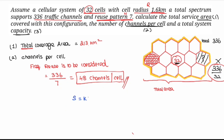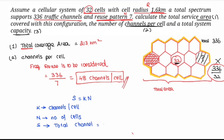The formula in theory is: S equals K into N, where K is the number of channels per cell, N is the number of cells per cluster, and S is the total channels. Substituting: 336 equals K into 7. Therefore K equals 336 divided by 7, which is 48 channels per cell.